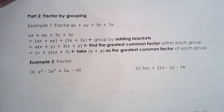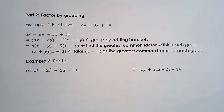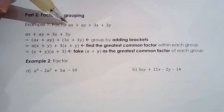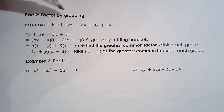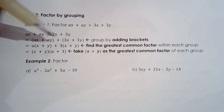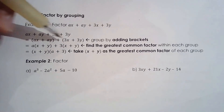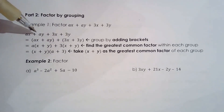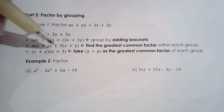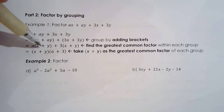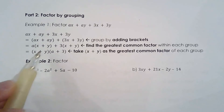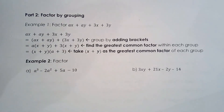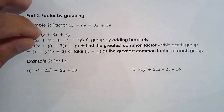Let's move to the next idea in this lesson: factoring by grouping. In this example we have four terms: ax + ay + 3x + 3y. What you want to do is group these four terms into two pairs, then common factor each grouping, and hopefully you'll see there's a common factor — even if it's a binomial. Binomials can be common factors too.